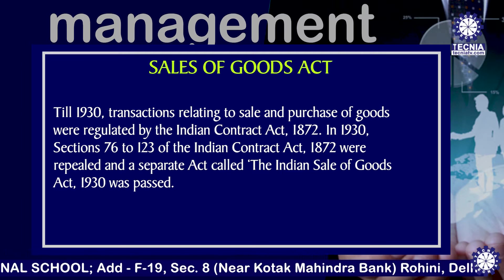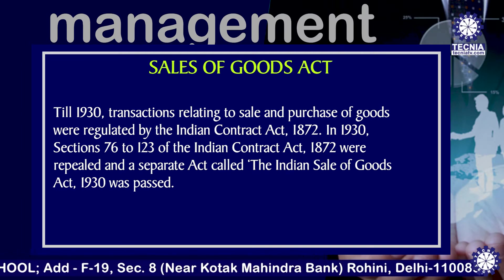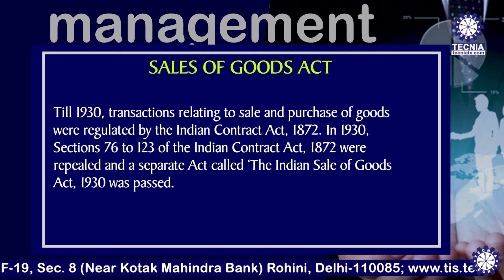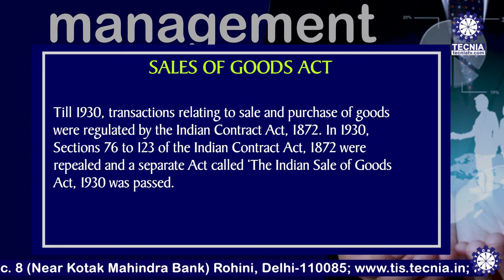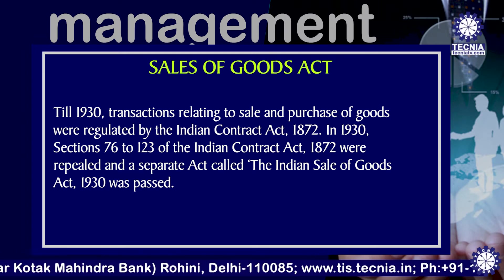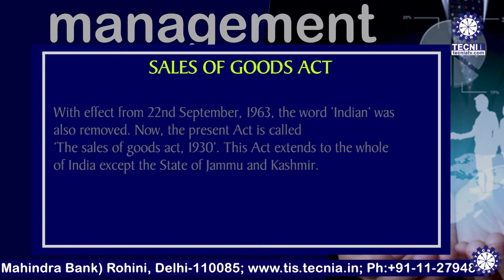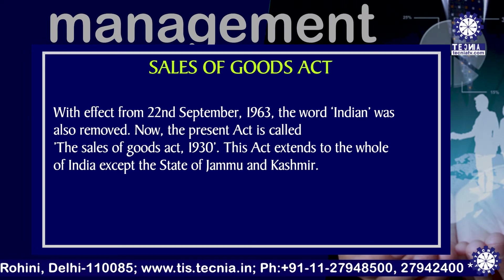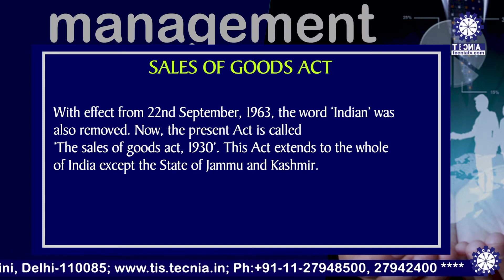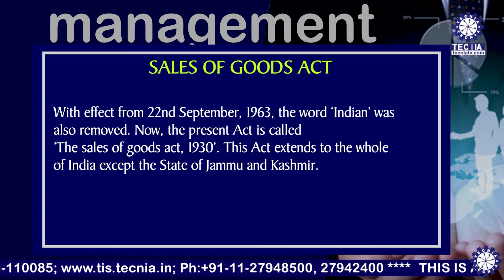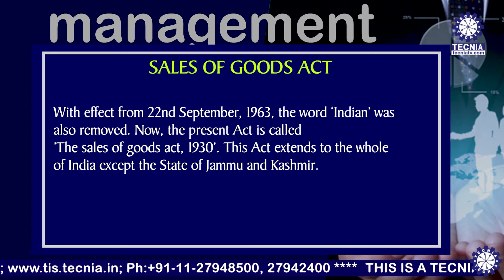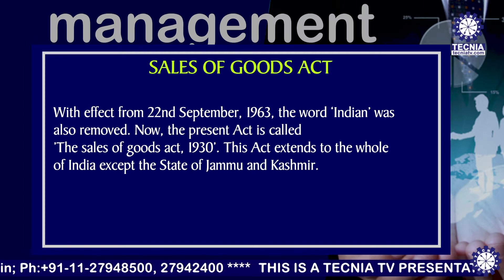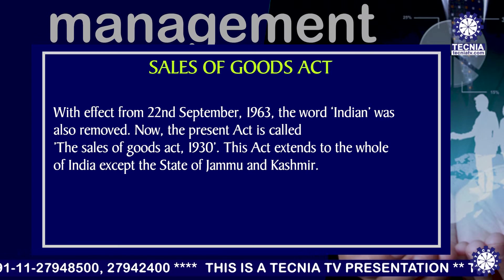In 1930, sections 76 to 123 of the Indian Contract Act 1872 were repealed and a separated act called the Indian Sales of Goods Act 1930 was passed. With effect from 22nd September 1963, the word 'Indian' was removed. Now, the present act is called the Sales of Goods Act 1930. This act extends to the whole of India except the state of Jammu and Kashmir.